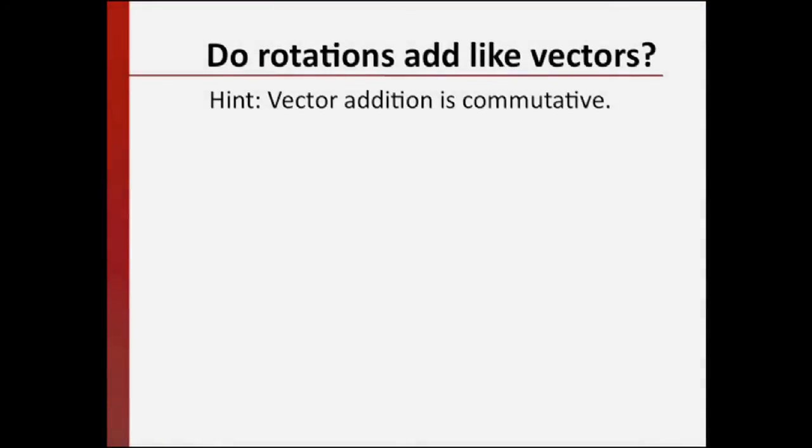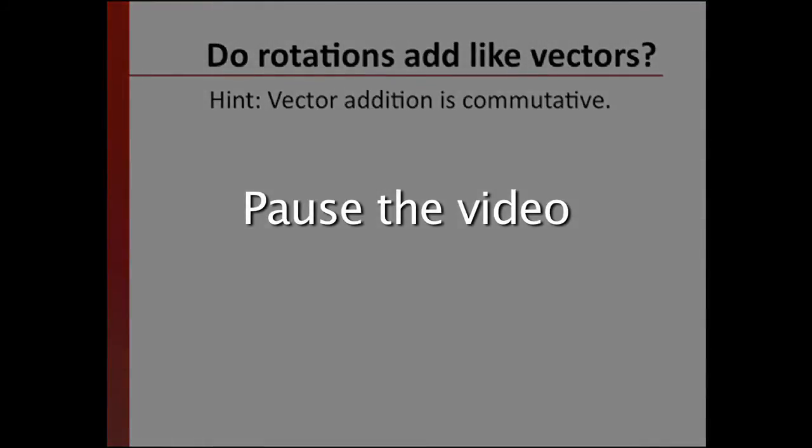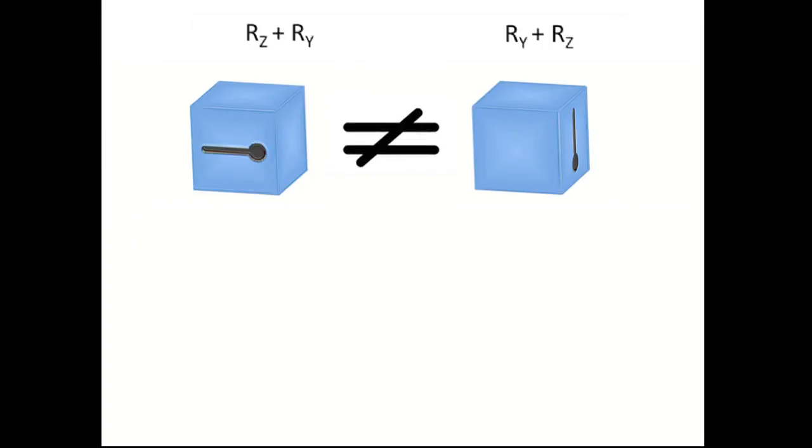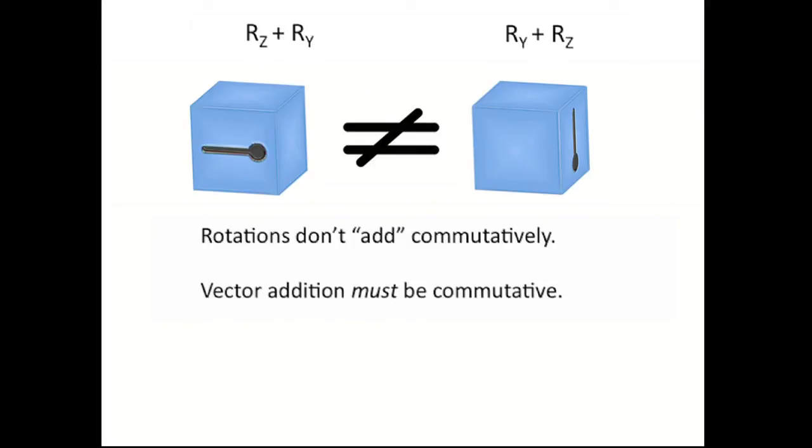Do rotations add like vectors? If we rotate the object a quarter turn around the z-axis followed by a quarter turn around the z-axis, the object ends up in the following position. If instead we rotate a quarter of a turn around the y-axis followed by a quarter turn around the z-axis, the object ends up in this position. Are the ending positions the same for the two different permutations of the rotations? No, they are not. This means that rotations do not add commutatively. But vector addition must be commutative. So this tells us that we cannot use vectors to represent rotations.